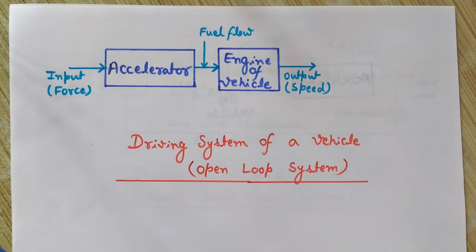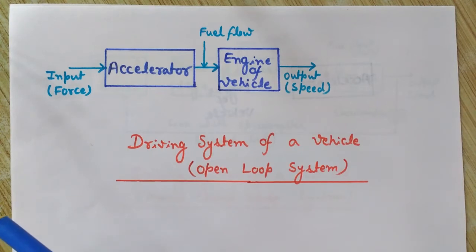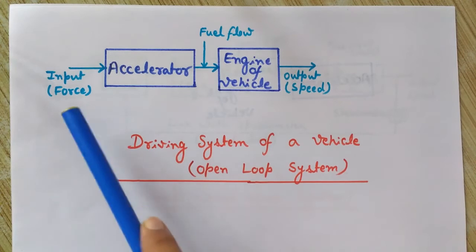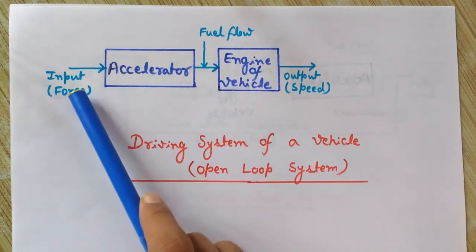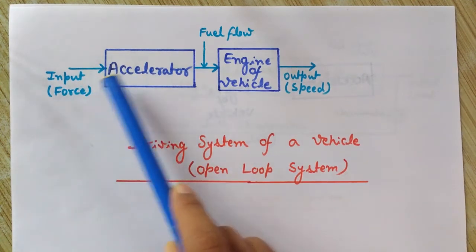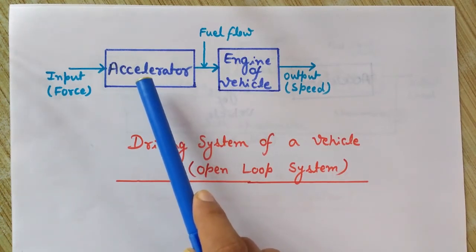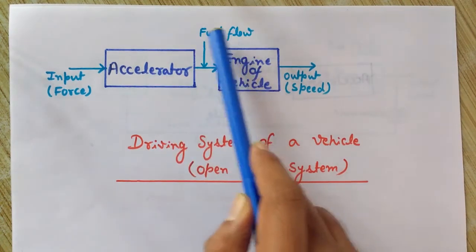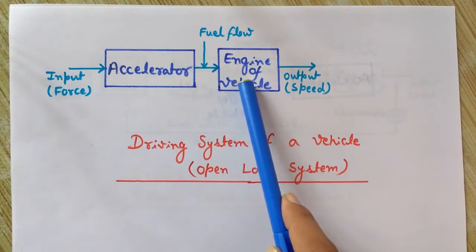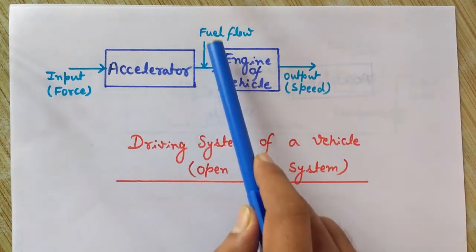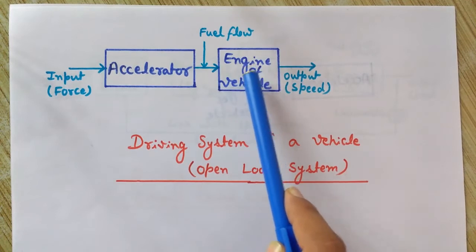Here is an example of a vehicle where someone is pressing the accelerator, and by pressing the accelerator, the speed of the vehicle is changing. The input is in the form of a force applied by the leg muscles on the accelerator of the vehicle. As the force is applied on the accelerator, the fuel flows into the engine of the vehicle.